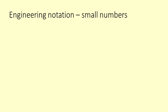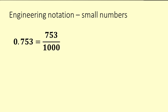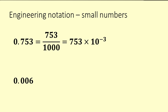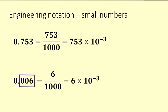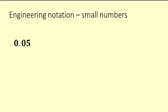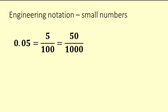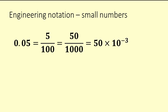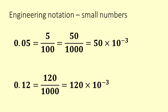Now we get to small numbers — numbers smaller than 1. If we have 0.753, that is 753 thousandths, which is 753 times 10 to the negative 3. Then 0.006 is 6 thousandths, so that's 6 times 10 to the negative 3. For 0.05 — five hundredths — we turn it into thousandths: that's 50 thousandths, so 50 times 10 to the negative 3. And 0.12 is 120 over a thousand, so that's 120 times 10 to the negative 3.